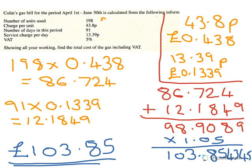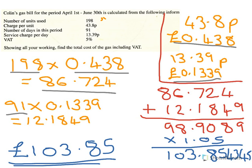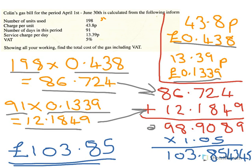Here's the answer to this one. First I changed the pence to pounds for both charges. The number of units used is 189 — multiply by the price for each one to get that cost. Then 91 days were charged at that daily rate. Add those two amounts together to get the total cost, then add the VAT. Multiply by 1.05 and make sure it's two decimal places to get the final mark.